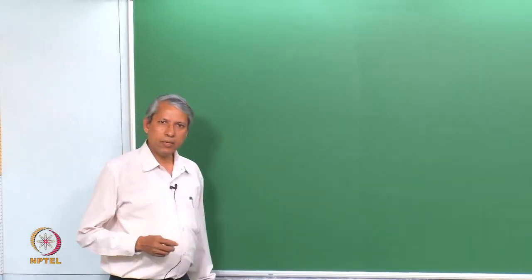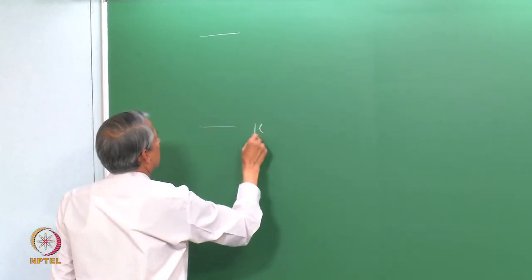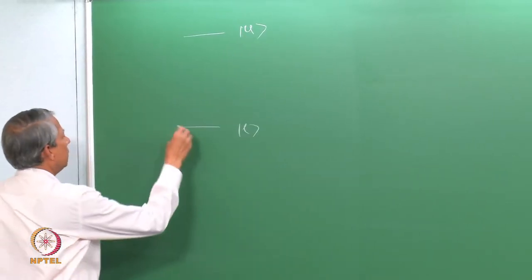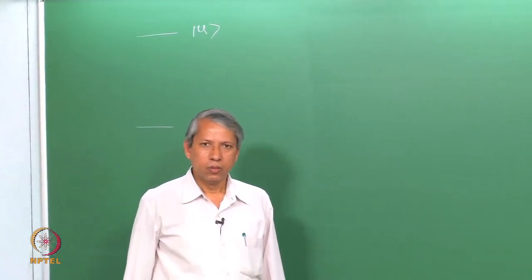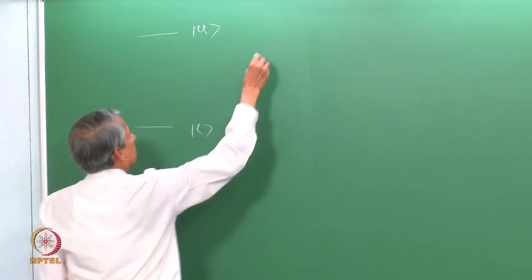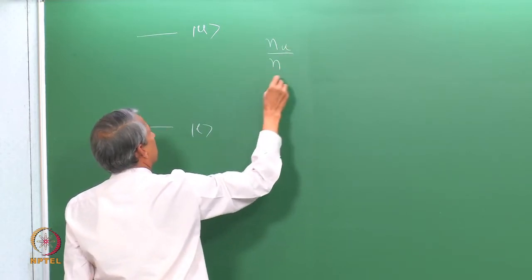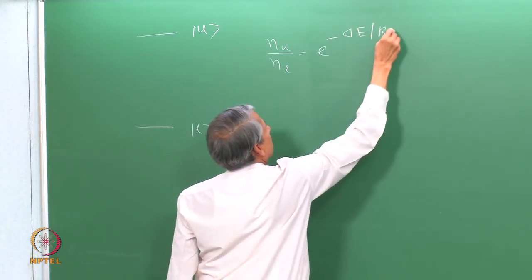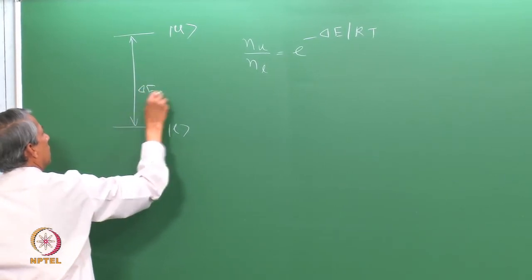For simplicity, let us consider only a two-level system — a lower level and an upper level. We have a collection of particles which are distributed in these two levels according to Boltzmann distribution. The number of particles in the upper level divided by the number in the lower level is given by the Boltzmann factor, where T is the temperature of the system and delta E is the energy gap.